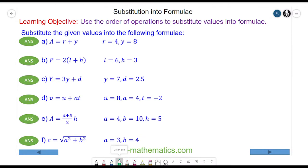Hello, in this lesson we're going to use the order of operations to substitute values into formulae. We begin with question a: a equals r plus y, and it's been given that r equals 4 and y equals 8. So we're going to substitute these known values in place of their letters. A will equal r, which is given as 4, plus y, which is given as 8. So when r is 4 and y is 8, the value of a equals 12.